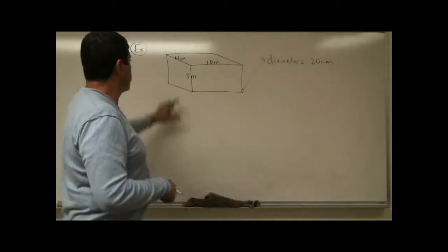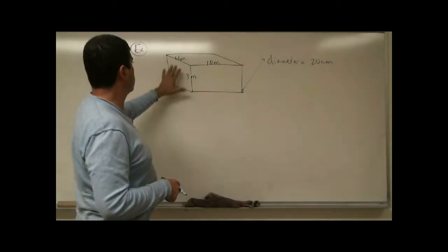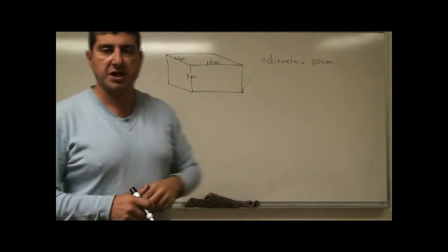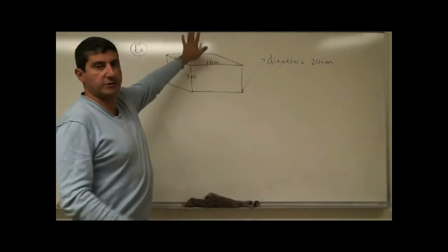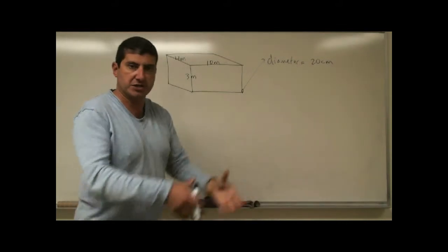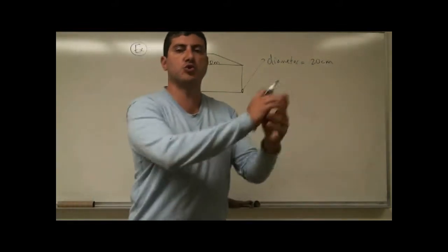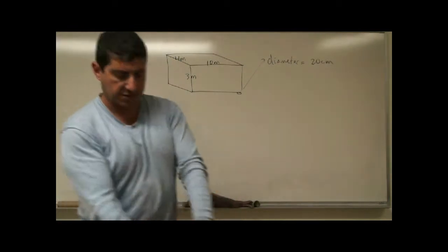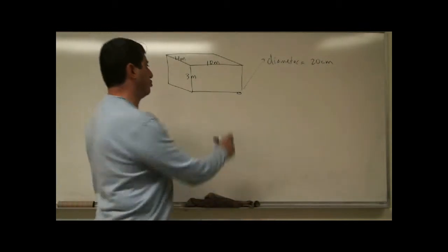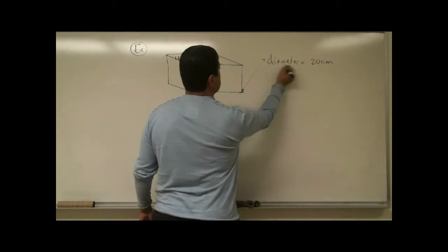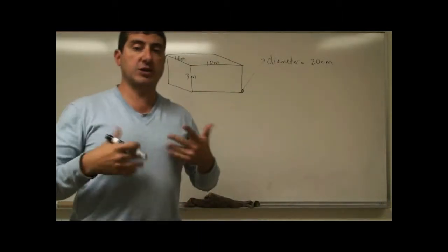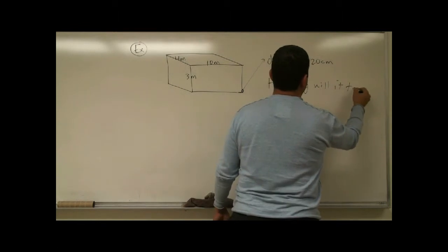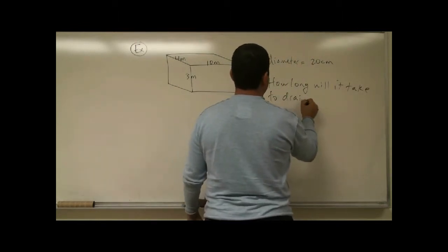Now we're going to do a problem. Imagine there's a pool full of water. The top of the pool is 10 meters long and 4 meters wide, and the pool is 3 meters in depth. We want to drain this pool. Assume it is completely full of water, and there's an opening — a pipe — at the bottom. The diameter of the opening is 20 centimeters. How long will it take to drain the pool?